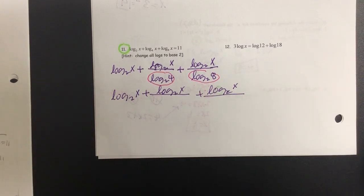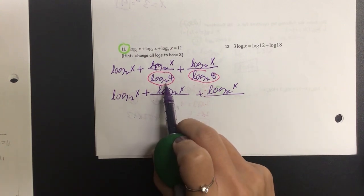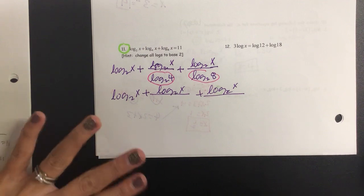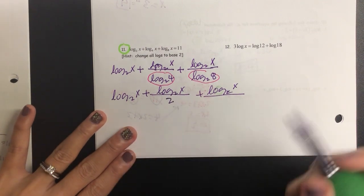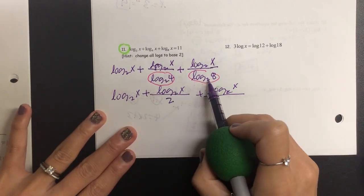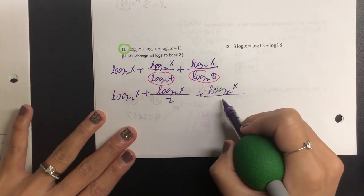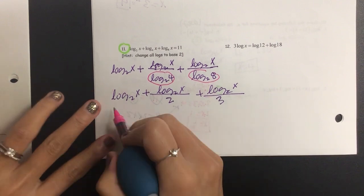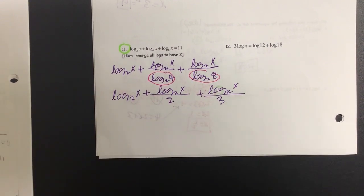I'm going to write out everything as it is for now except the base, the bottoms. On this right here, 2 to the power of something is equal to 4, what is that something? 2. The next one, 2 to the power of something is 8, what is that something? 3.